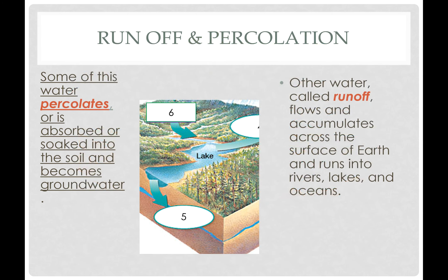Once the rain starts falling, it can do a couple things. One, it can become runoff, where it will flow down from the highest points of the earth where it hits — like mountain tops — and it will accumulate in lakes, oceans, rivers, things like that. If it doesn't accumulate there, it can also soak down into the soil. That's called percolation, and it will get absorbed down there and become what they call groundwater.